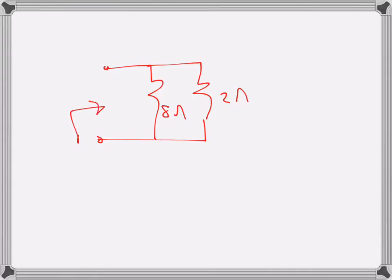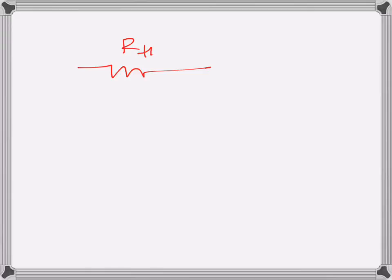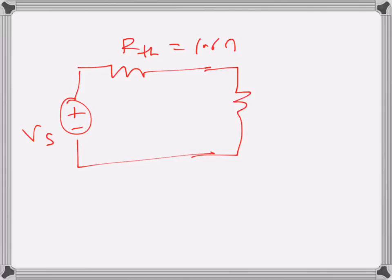So the Thevenin resistance is 8 times 2 divided by 8 plus 2, which is 16 over 10 = 1.6 ohms. In order to ensure that R gets maximum power transferred to it, the value of R must also be 1.6 ohms. The situation will be: R-Thevenin is 1.6 ohms replacing the remaining resistances, and there is a Thevenin voltage source which we haven't calculated and don't need. The value of R is also 1.6 ohms.